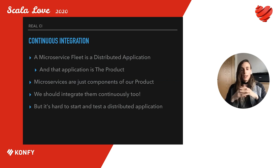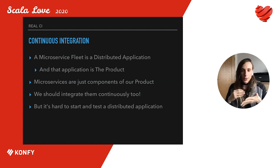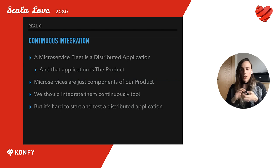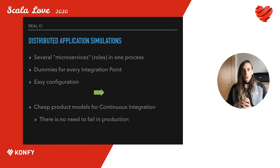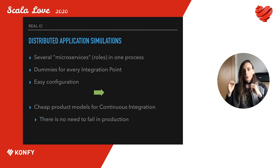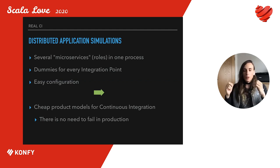We believe that the microservice platform is itself a distributed application and that application is the product. Each individual microservice is no more than a mere component of the product, and we should integrate these components the same way we integrate our program components. Yes, it's hard to test distributed applications, but we can catch a lot of potential issues even if we test our product in a relaxed simulation without the networking aspect. In conclusion, one of our productivity recipes is to turn microservices into roles and allow them to coexist within a single process, write reasonable precise dummies for every integration point, and make your applications easily configurable. This will let you make cheap models of your product, enable real continuous integration, and you will experience a lot less failures in production.